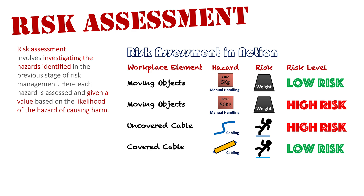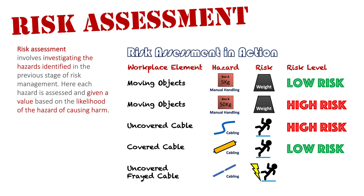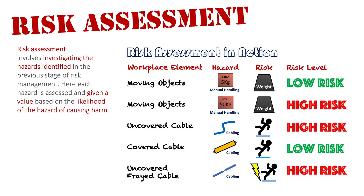There's a third situation for cables: an uncovered frayed cable. The cable has been split and exposed the inside wires. This has two risks associated with it — it's a trip hazard and an electrical hazard. Two ways people can get injured from this cable, and thus it's still a very high risk. One hazard can have multiple risks associated if left unchecked.